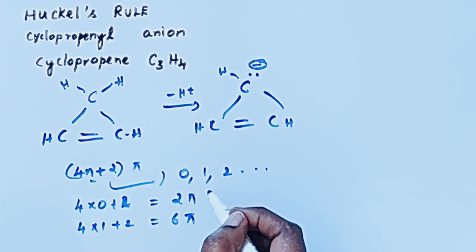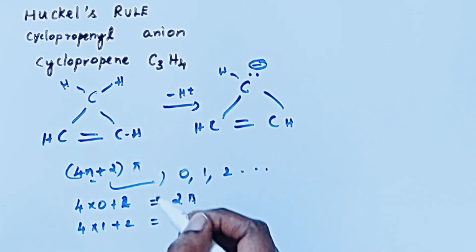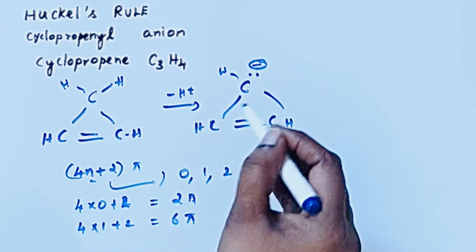It means if your compound possesses 2 pi electrons, 6 pi electrons, or 10 pi electrons then the compound is aromatic. Now come to our question.